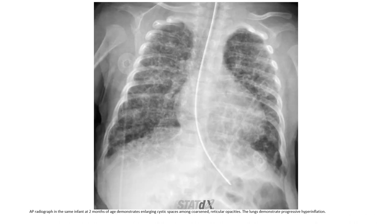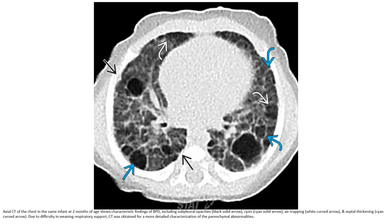Same patient at two months of age demonstrated enlarging cystic spaces, consolidation, reticular opacity, and the lung demonstrated progressive hyperinflation. Same patient CT at two months of age shows characteristic findings of bronchopulmonary dysplasia including subpleural opacity, cysts, air trapping, and septal thickening. Due to difficulty in weaning respiratory support, CT was obtained for more detailed characterization of parenchymal abnormality.